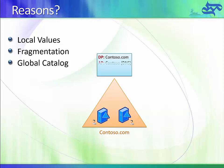The next partition is the application partition, which is normally used to store DNS information. If your DNS zones are Active Directory-integrated, the zone data is stored in the application partition. The third is the schema partition (SP), which exists on all domain controllers but is completely read-only unless you're working on the Schema Master role. The fourth is the configuration partition (CP), also stored on all domain controllers and read-only unless you're working on the root domain.